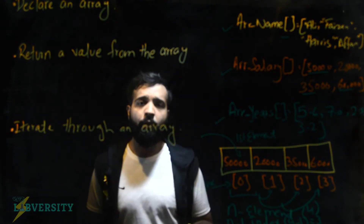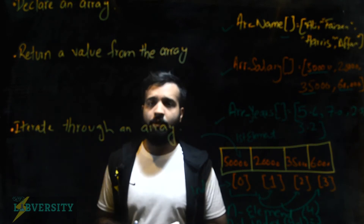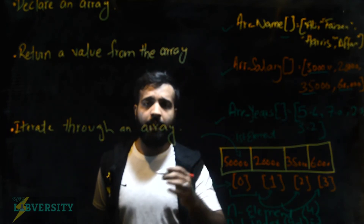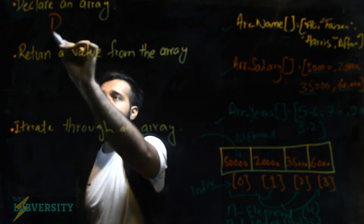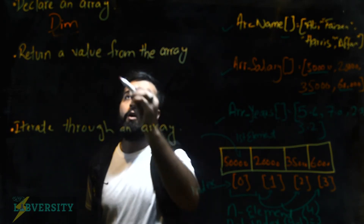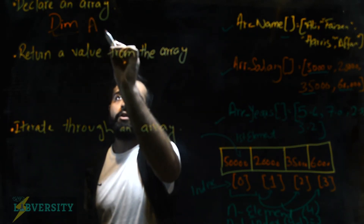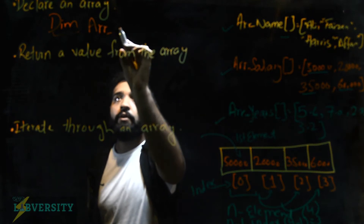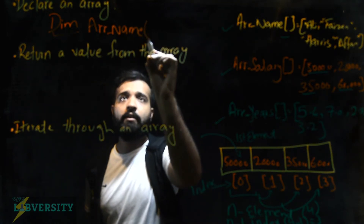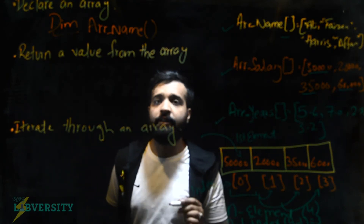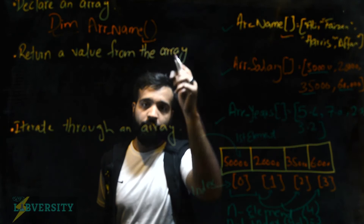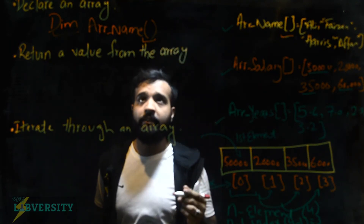So how do we declare an array? I am going to write the Visual Basic syntax here. When you declare an array in Visual Basic, you first write the keyword 'Dim' to declare the variable or the array, then you write the name of the array — for example 'array_names' or just 'name' — and then you write round brackets, which symbolize that this is not a simple variable but a collection of elements, an array.